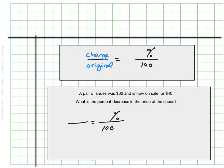And again, you want to fill in what you know. So we know that we're trying to find the percent out of a hundred, and we know the original price was $60 and it's on sale for 40. So that means there's a change of 20 bucks. So my change here is 20. It's a change of $20 out of an original price of 60.